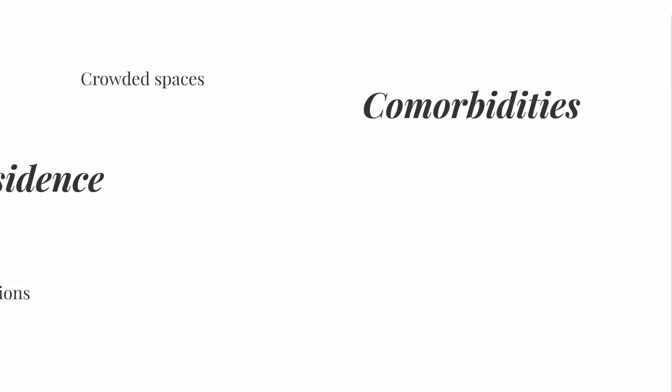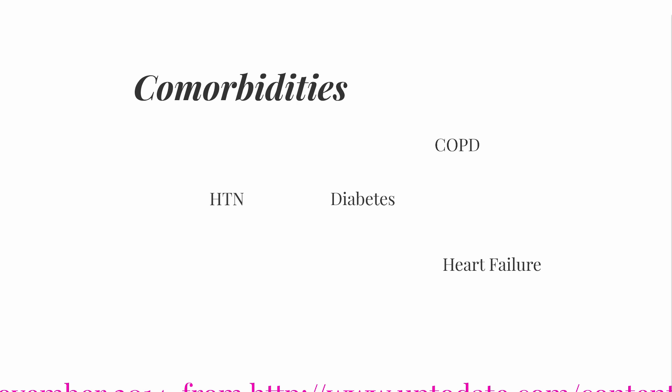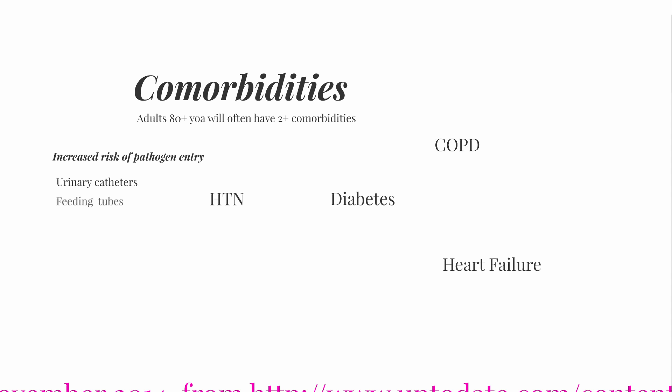Next, we have comorbidities. Most people over 65 years of age will have at least one comorbidity, such as hypertension, diabetes, COPD, or heart failure. After 80 years of age, you'll often find that people will have at least two chronic conditions. These ongoing insults can and will often result in a weakened or less effective immune system. In addition, some of these comorbidities may require indwelling devices such as a urinary catheter, feeding tubes, or intravascular catheters — all of which create additional portals for pathogens to enter the body.